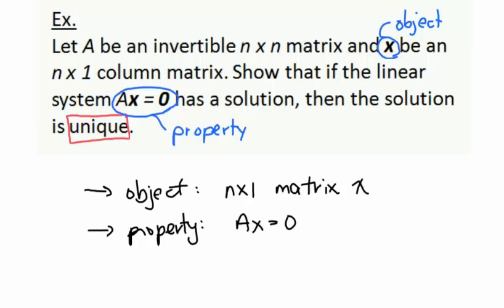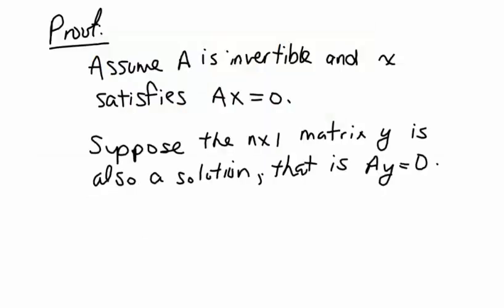Our object is the n by 1 matrix x, and the special property is A times x equals the n by 1 zero matrix. To start the proof, we assume A is invertible and x satisfies A times x equals 0. Since this is a uniqueness proof, we also suppose a second n by 1 matrix y satisfies A times y equals 0. Notice A times x and A times y are both equal to the zero matrix.